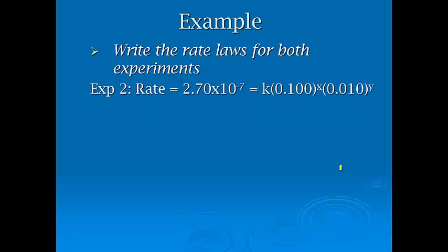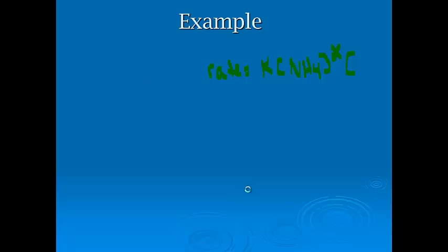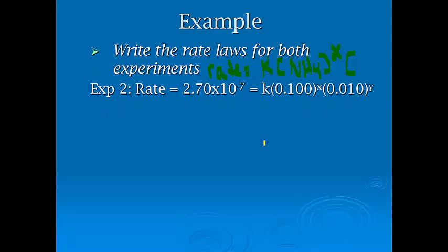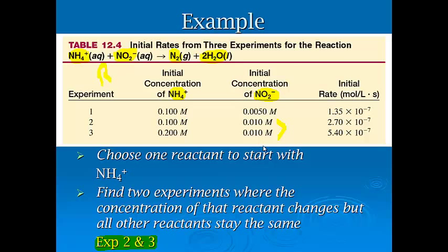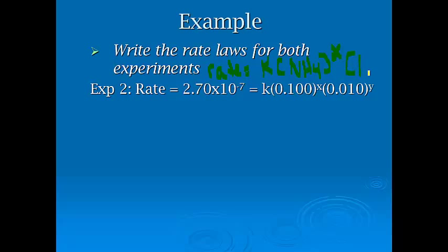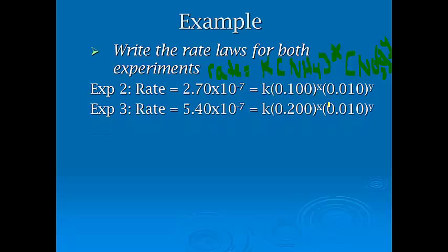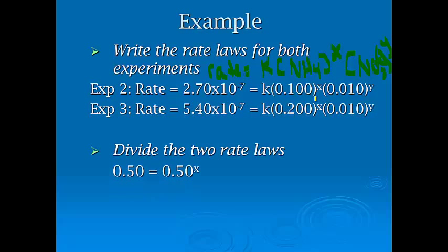Write the rate laws. So remember, when we write the rate law, it's always the rate equals K constant, and then you have your concentrations raised to the X and the Y. So the rate is equal to K times ammonium to the X, and then we've also got the nitrite to the Y. This is experiment number two and then experiment number three. We divide those two rate laws.